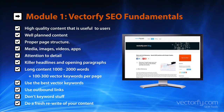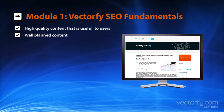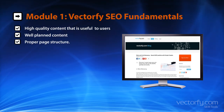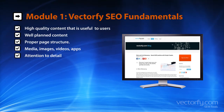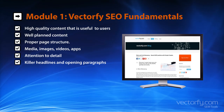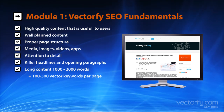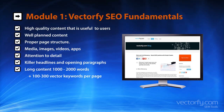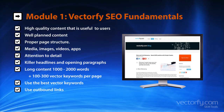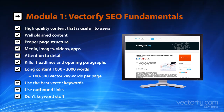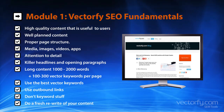Here's a quick recap. You want: 1. High-quality content that is useful and helpful to users. 2. Well-planned content. 3. Proper page structure. 4. Media — images, videos, apps. 5. Attention to detail. 6. Killer headlines and opening paragraphs. 7. Long content — 1,000 to 2,000 words, plus 100 to 300 vector keywords per page. 8. Use the best vector keywords. 9. Use outbound links. 10. Don't keyword stuff. 11. Do a fresh rewrite of your content with these principles in mind.